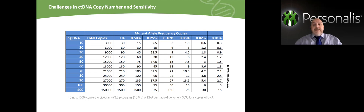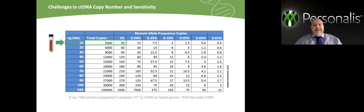The calculation is indicated below the table. If we take a standard blood or plasma sample, we may extract, depending on the extraction method, approximately 10 nanograms of ctDNA, which represents approximately 3,000 copies of DNA. If one marker is available with an allele frequency of 1%, we have approximately 30 copies left with this particular marker.